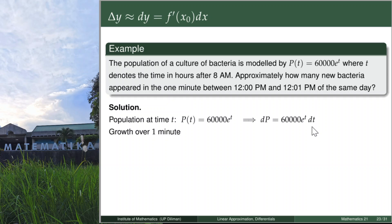What does dt mean here? T = 4 at 12 p.m., and 12.01 p.m. is T = 4 plus a small increment of time — that's dt. That small increment is 1 minute. But since T is in hours, we write 1 minute as 1/60 of an hour, so dt = 1/60.